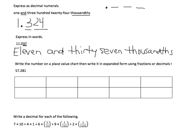Number 3c asks you to write a number on a place value chart, then write it in expanded form using fractions or decimals. The number reads 57 and 281 thousandths. The first thing that I need to do is label my place value chart.